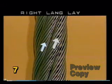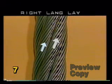Right Langley means that if you hold the wire in front of you, the strands or the bigger wires spiral to the right, and the smaller wires making up the bigger wires spiral in the same direction, also to the right.